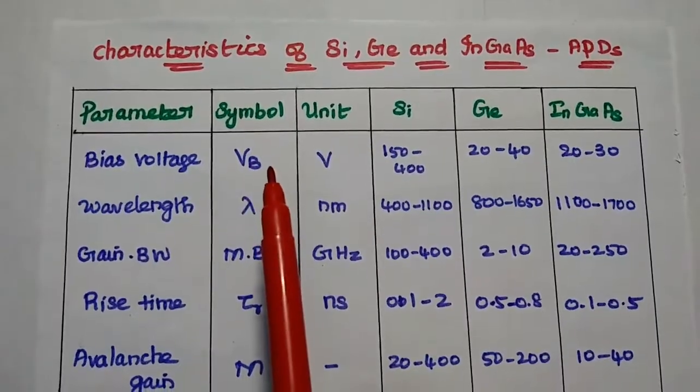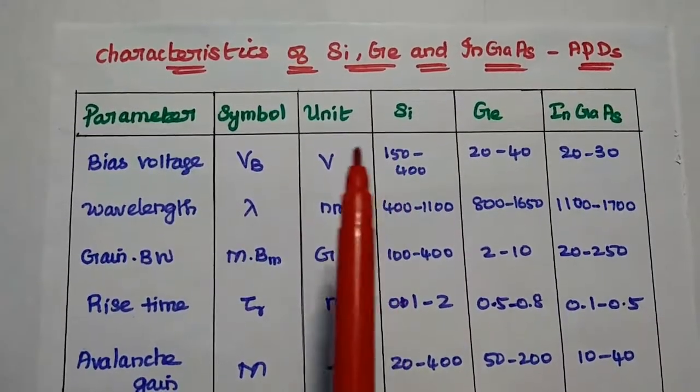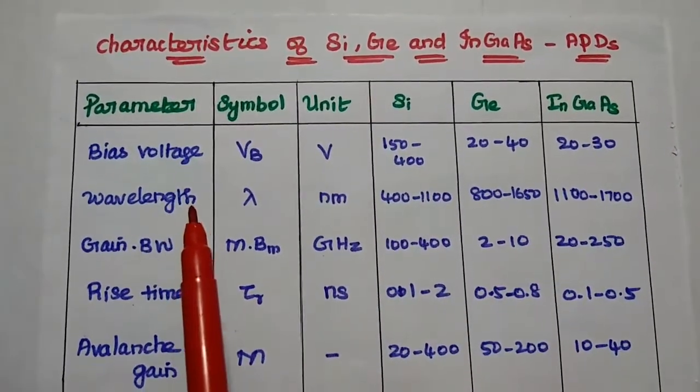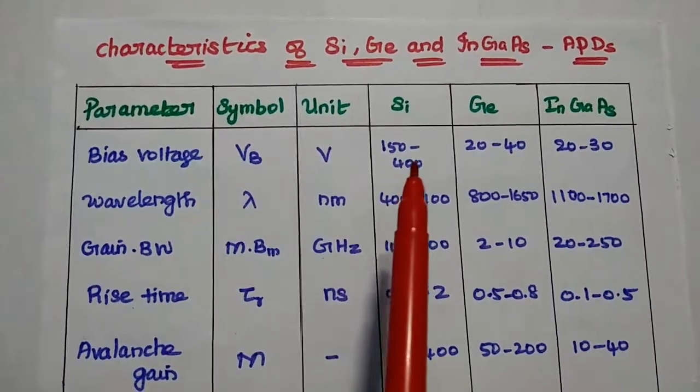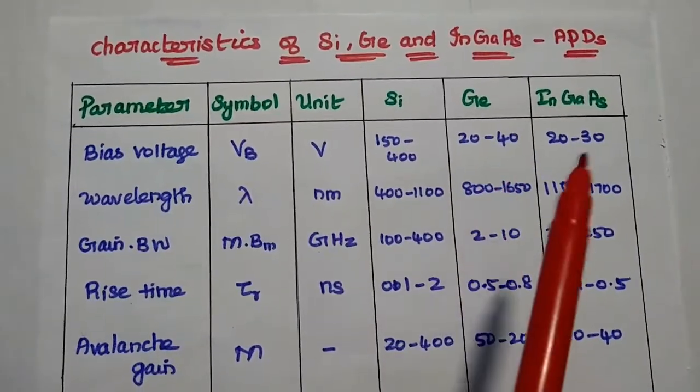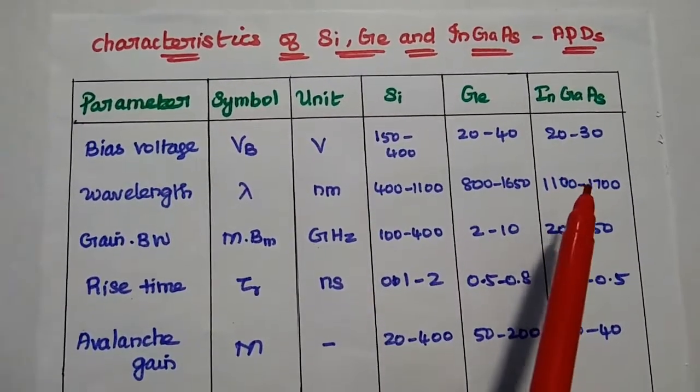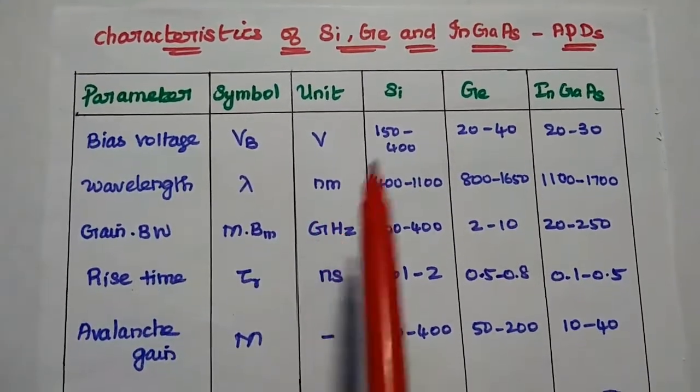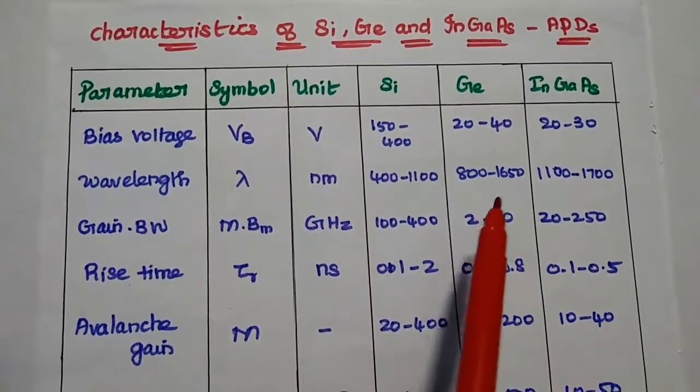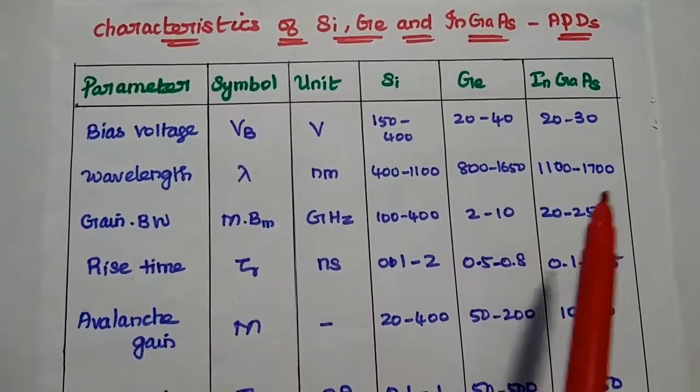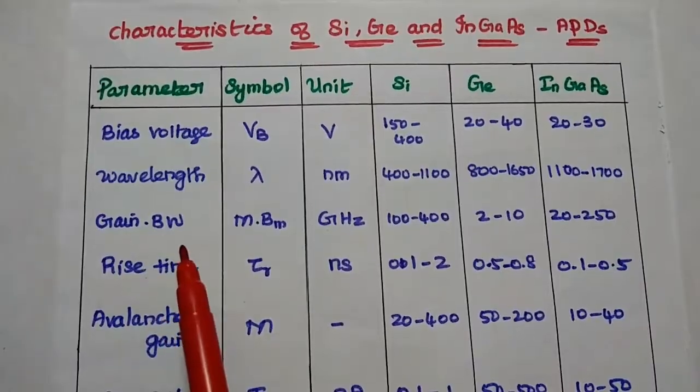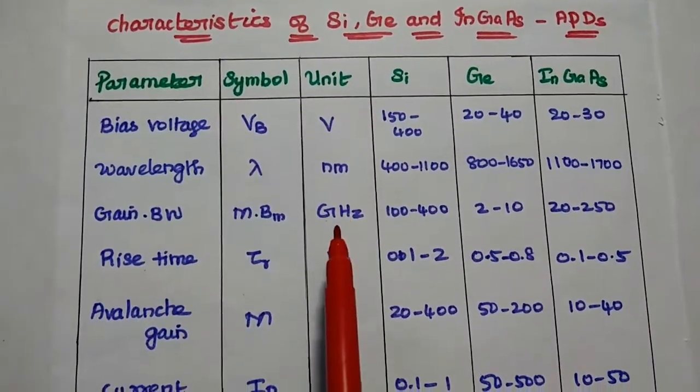Similarly, we can compare the characteristics of avalanche photodiodes using silicon, germanium, and indium gallium arsenide. Here the bias voltage for silicon APD is 150 to 400 volts, for germanium, its value is 20 to 40, for indium gallium arsenide 20 to 30. The wavelength in nanometer for silicon, it stands from 400 to 1100, for germanium 800 to 1650, for indium gallium arsenide 1100 to 1700.